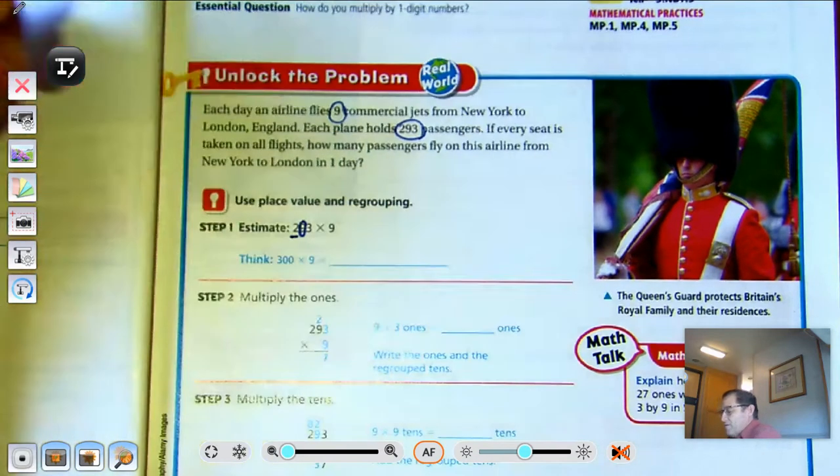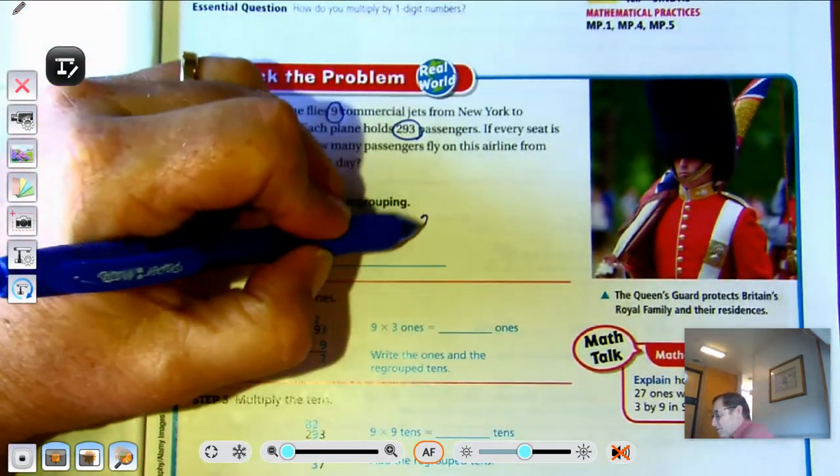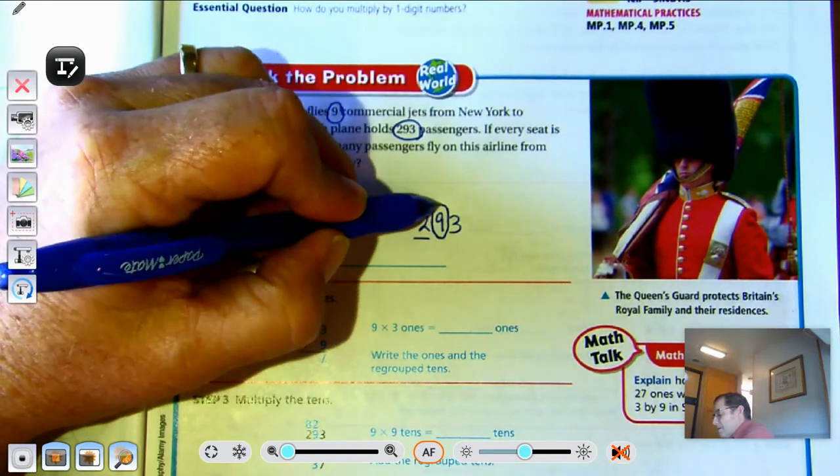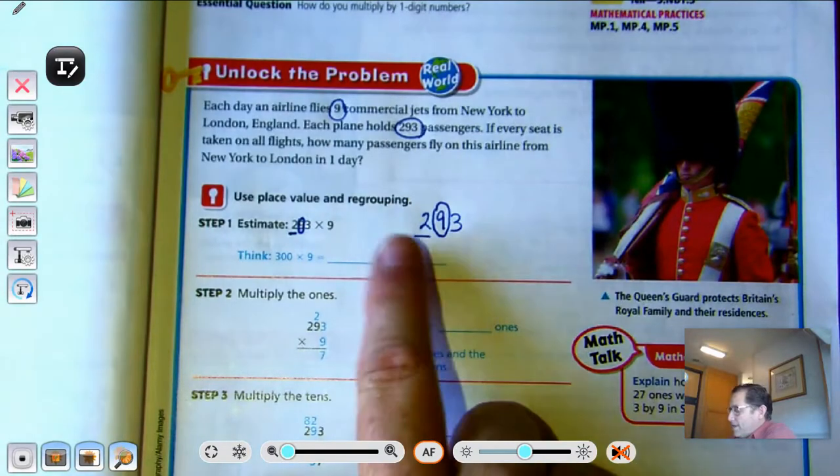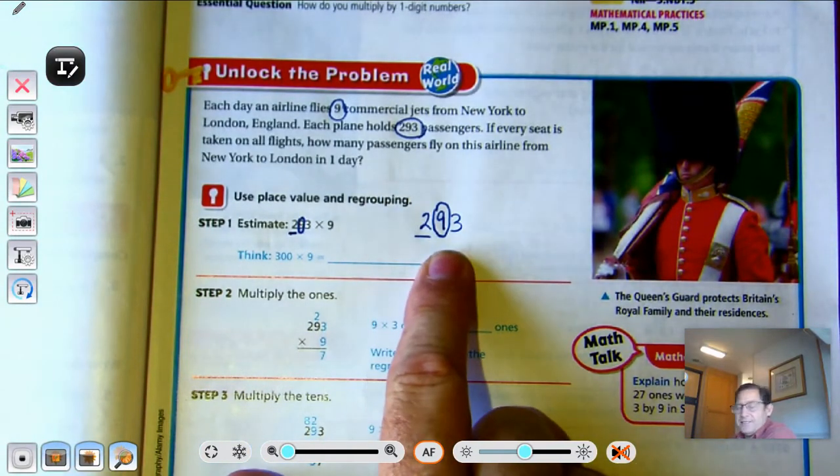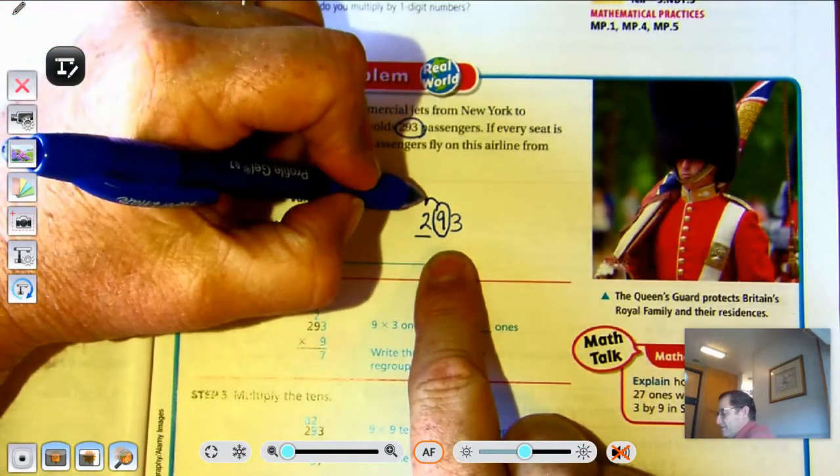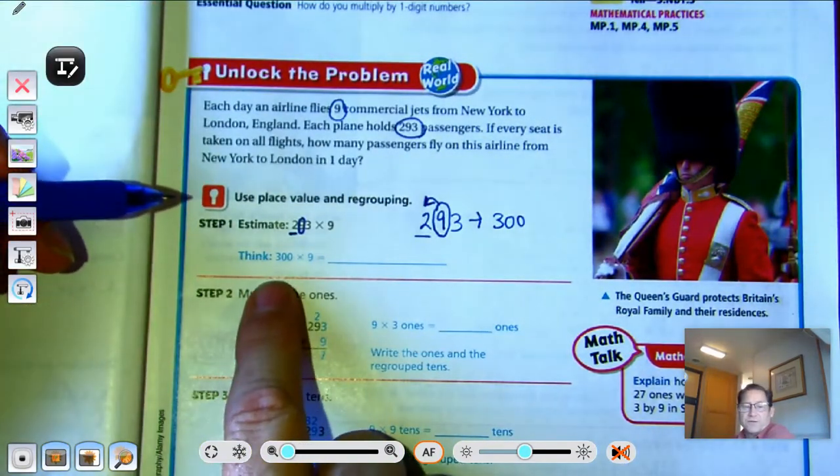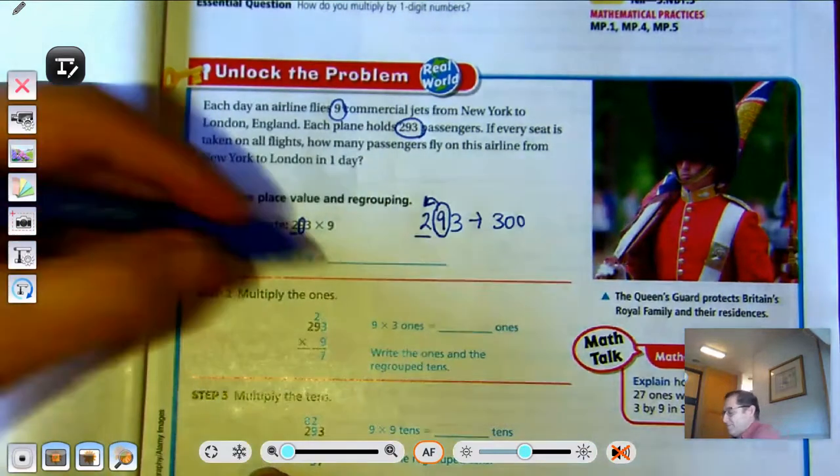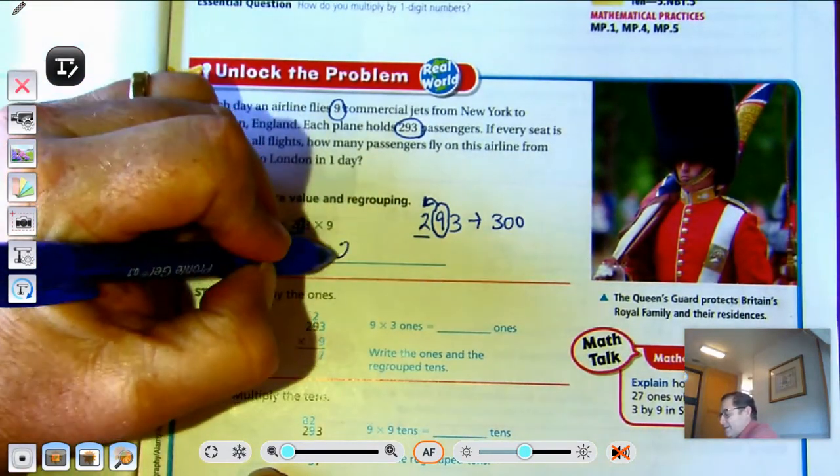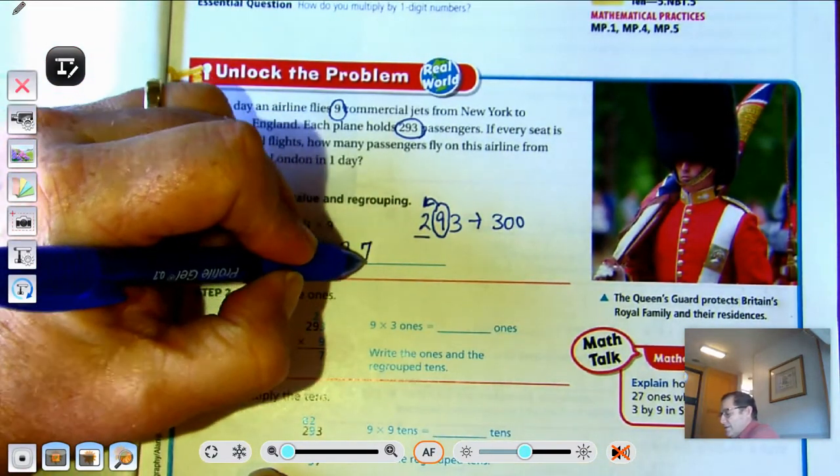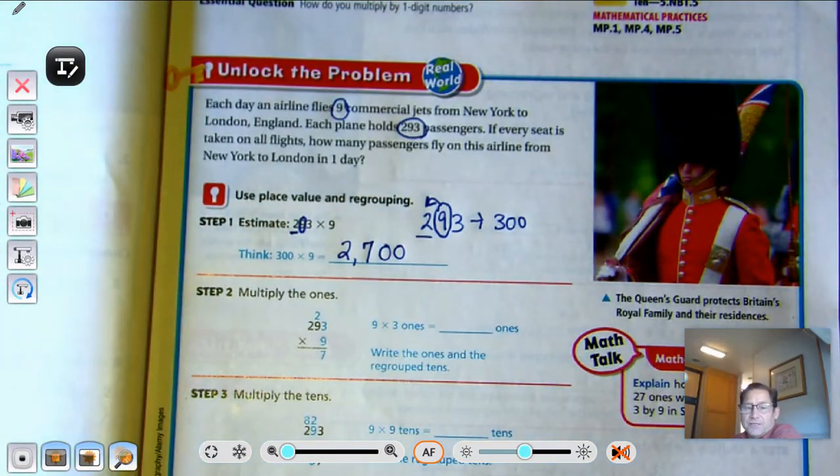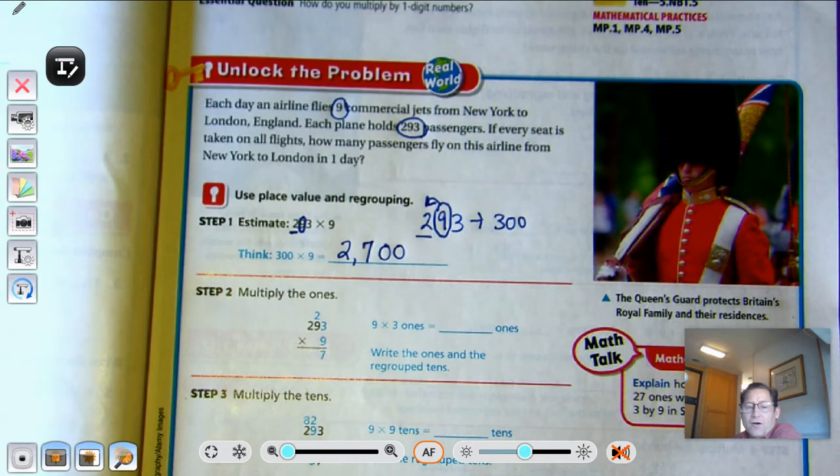And 293, you remember that if we're rounding to the hundreds, we'd look to the digit to the right. Let me write this larger here. Okay? So we're rounding to the hundreds. The digit in the tens is greater than 5, so we would round up to 300. So that's why they're saying 300 times 9. And 9 times 300 is 2700.